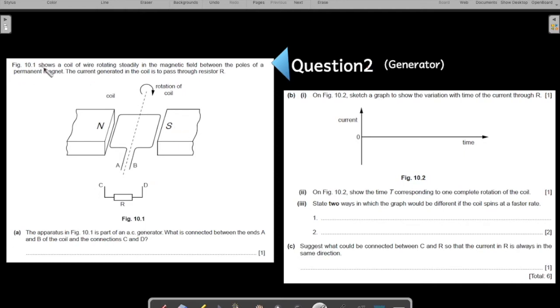So let us read what is happening. The figure here shows a coil of wire rotating steadily in the magnetic field between the poles of the permanent magnets. So you are given permanent magnets, you have a coil rotating in between this space. The current generated in the coil is passed through the resistor R.